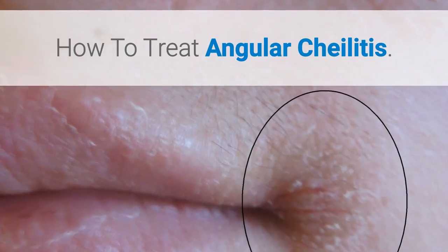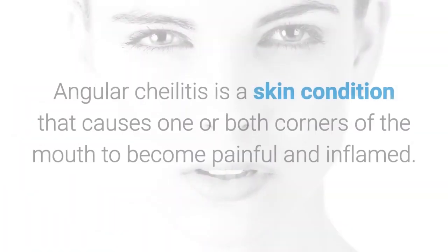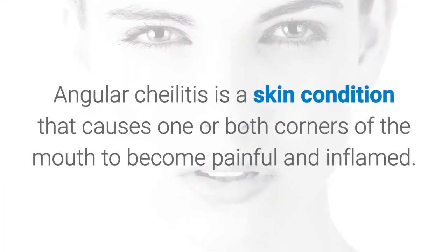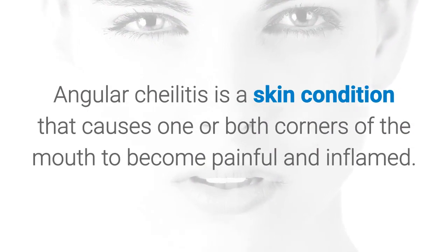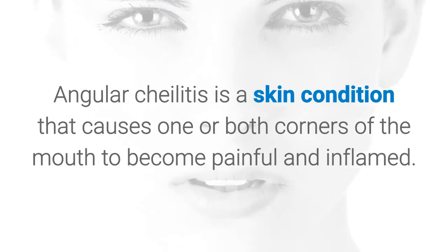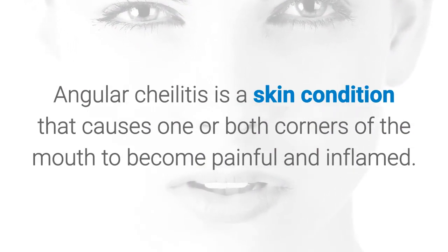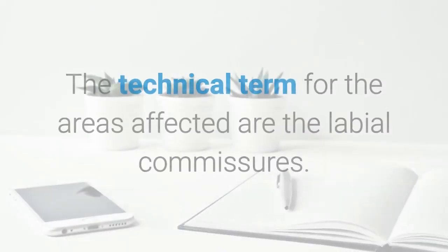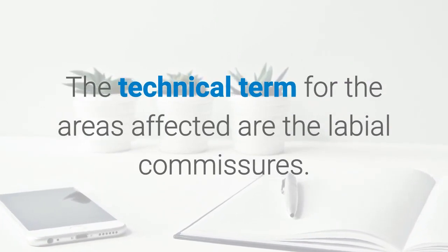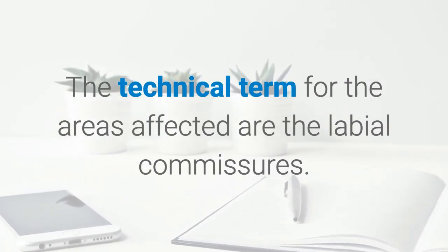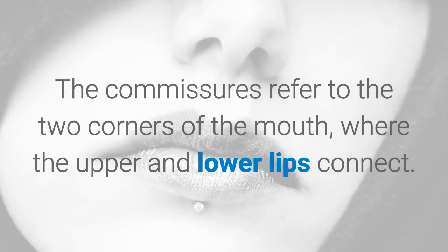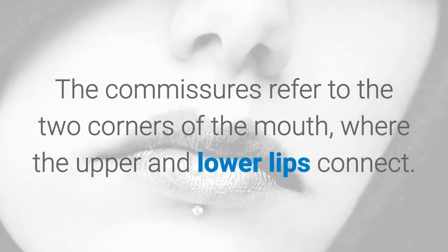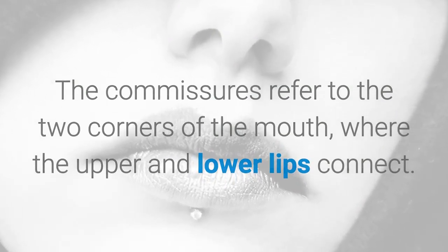Angular cheilitis is a skin condition that causes one or both corners of the mouth to become painful and inflamed. The technical term for the areas affected are the labial commissures, which refer to the two corners of the mouth where the upper and lower lips connect.